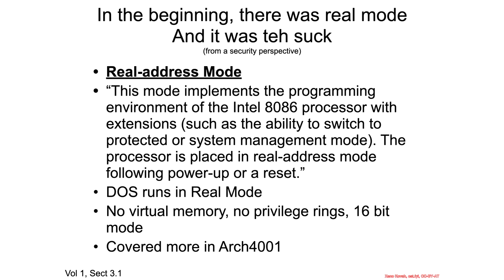In the beginning, there was real mode, and it was terrible from a security perspective. It is the original execution mode of the Intel 8086 processor, meaning old software like DOS runs in real mode. It doesn't have virtual memory, and it has no privilege levels, so there's no security separation. Everything runs in one big executable space, which is why older operating systems were very unreliable — different processes could scribble all over everybody's memory and crash the system. It is the original 16-bit execution mode.